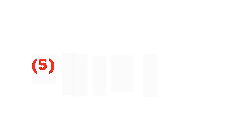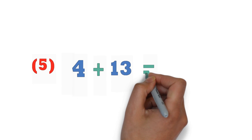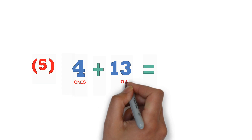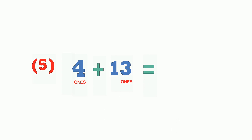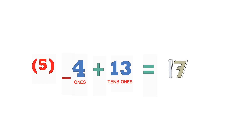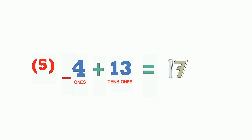So let's take a look at the next equation: 4 add 13 is equal to what. We've got 4 ones, add 3 ones, we realize it's 7 ones, so I'm going to put 7 ones. We've got 1 ten and we don't have any other tens here, so I'm just going to put the 1 ten — giving us 17.